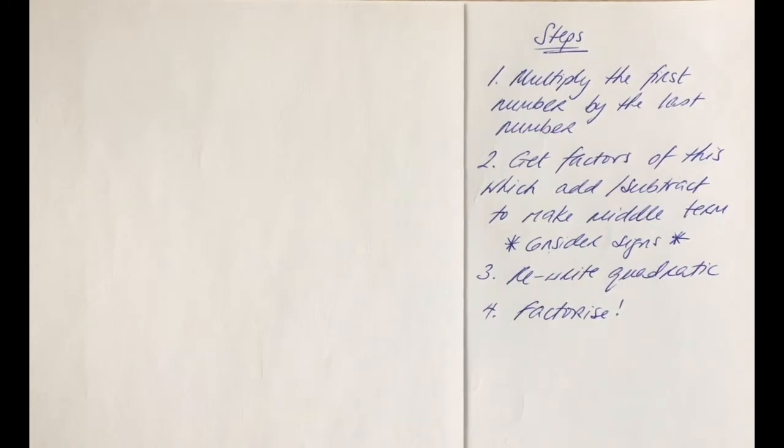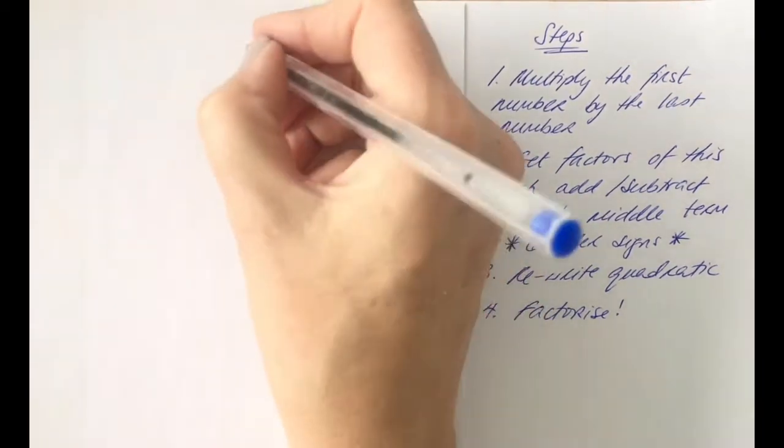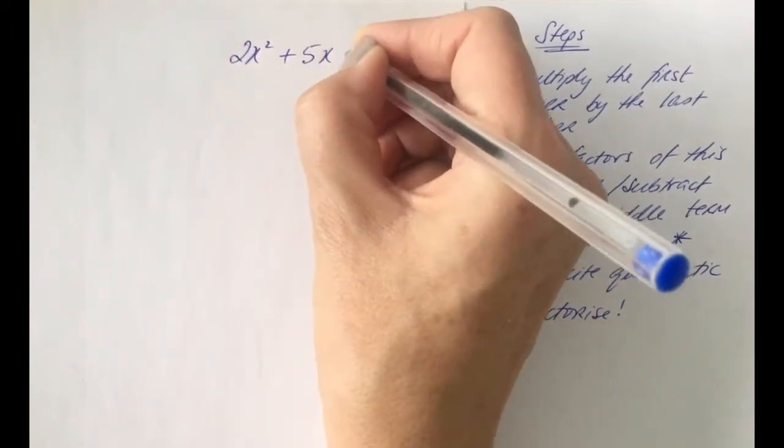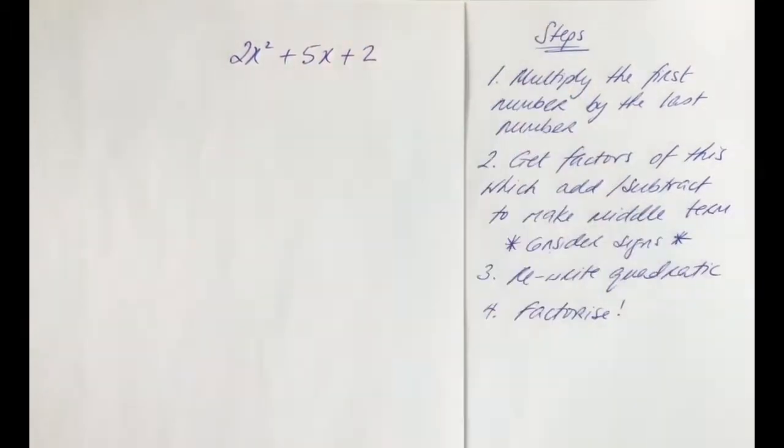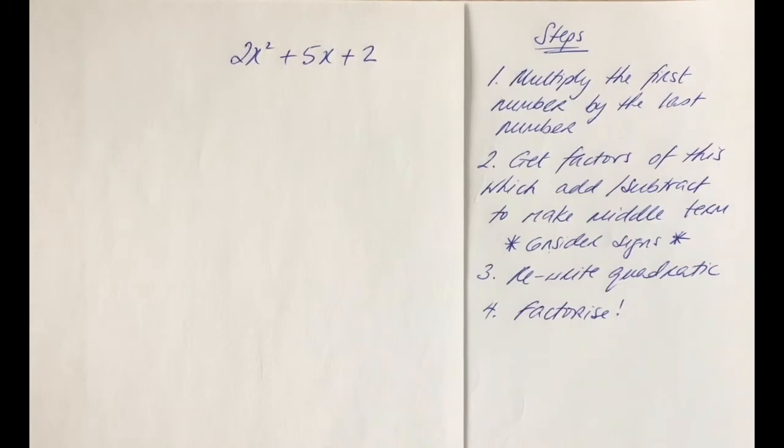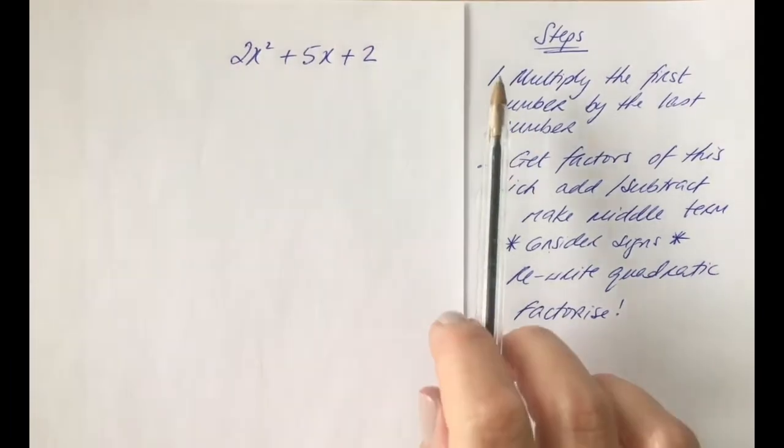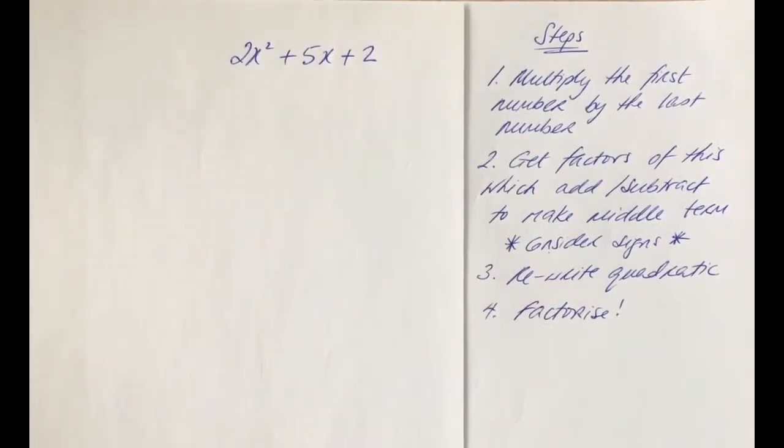Okay, so with this one we're going to start looking at some harder quadratics to factorize. So we are going to start off with 2x squared plus 5x plus 2. The difference with this one now is we have a number here before the x squared, so this means we're going to have to go through each of these four steps in order to factorize this quadratic.